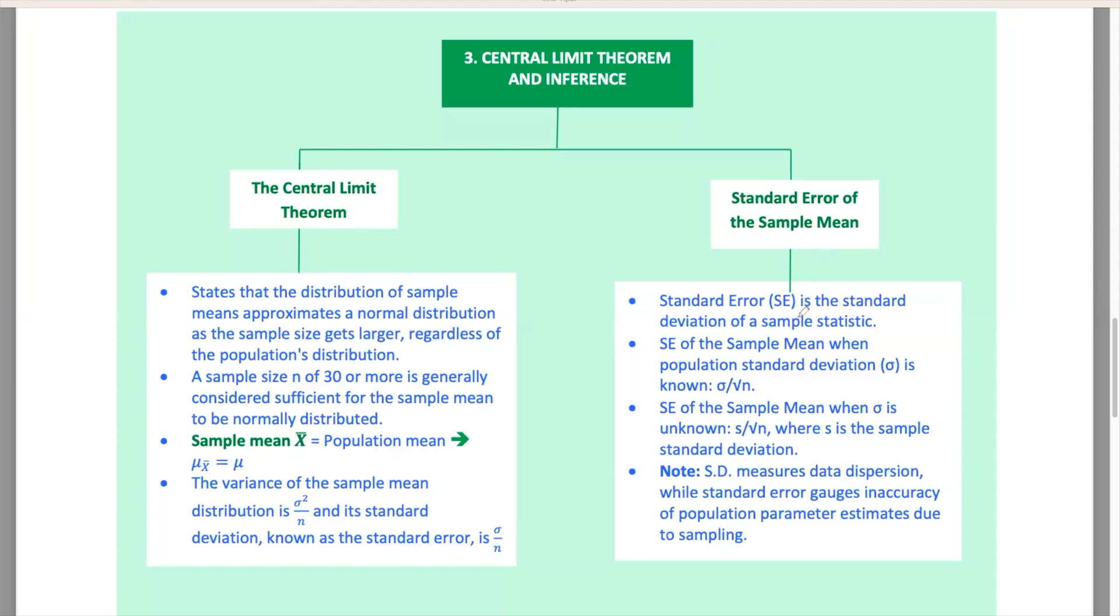If you know the population standard deviation, great. If not, you use the sample standard deviation to estimate it. Just remember, standard deviation measures how spread out your data is, while standard error measures the accuracy of your sample mean as an estimate of the population mean. Here's an example to make it clearer. Imagine you're conducting a study on the average test scores of students in a large school district. You take a sample of 50 students and find the mean score. The standard error tells you how much the mean score of your sample is likely to vary from the true population mean value if you were to take multiple samples.